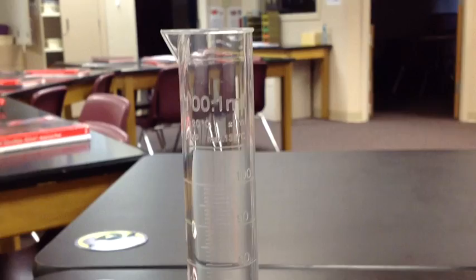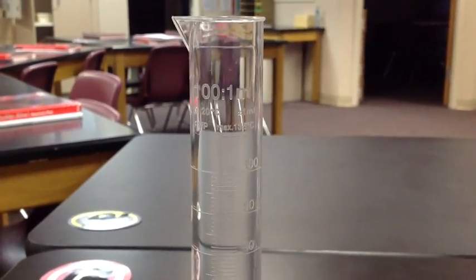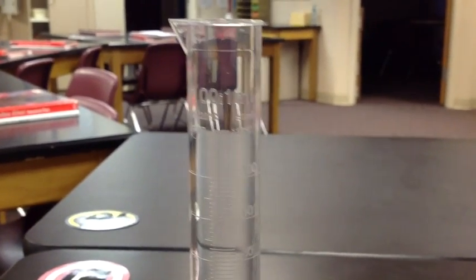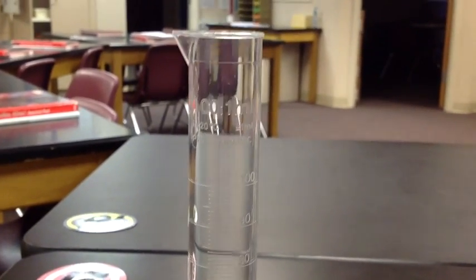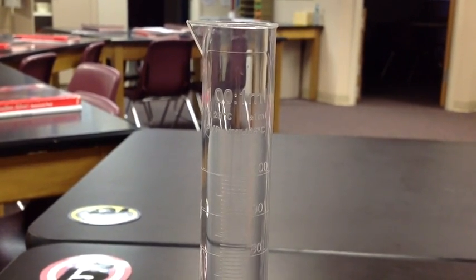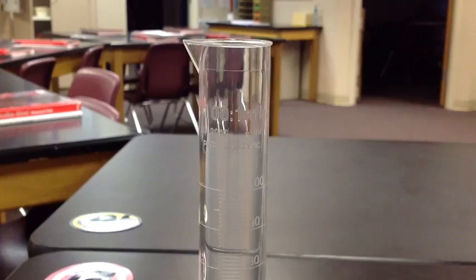So the first step is to fill this graduated cylinder with some water. Now when I say some water, it doesn't really matter how much you put in, as long as whatever object you're going to try to submerge goes all the way under the level of your initial water.